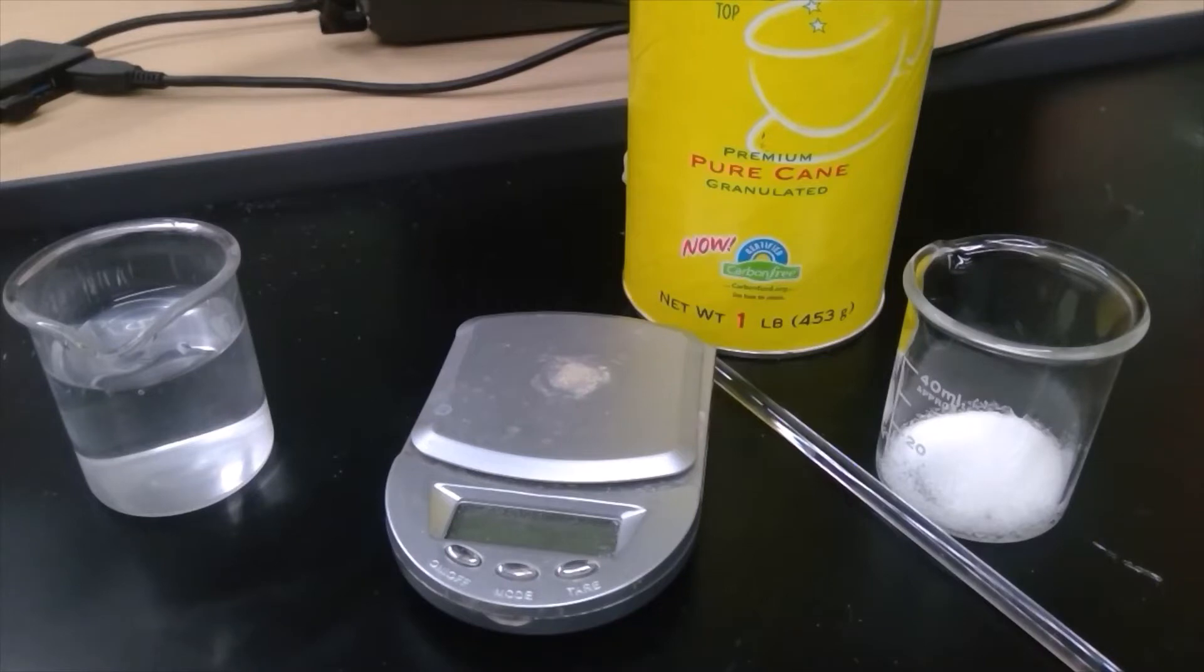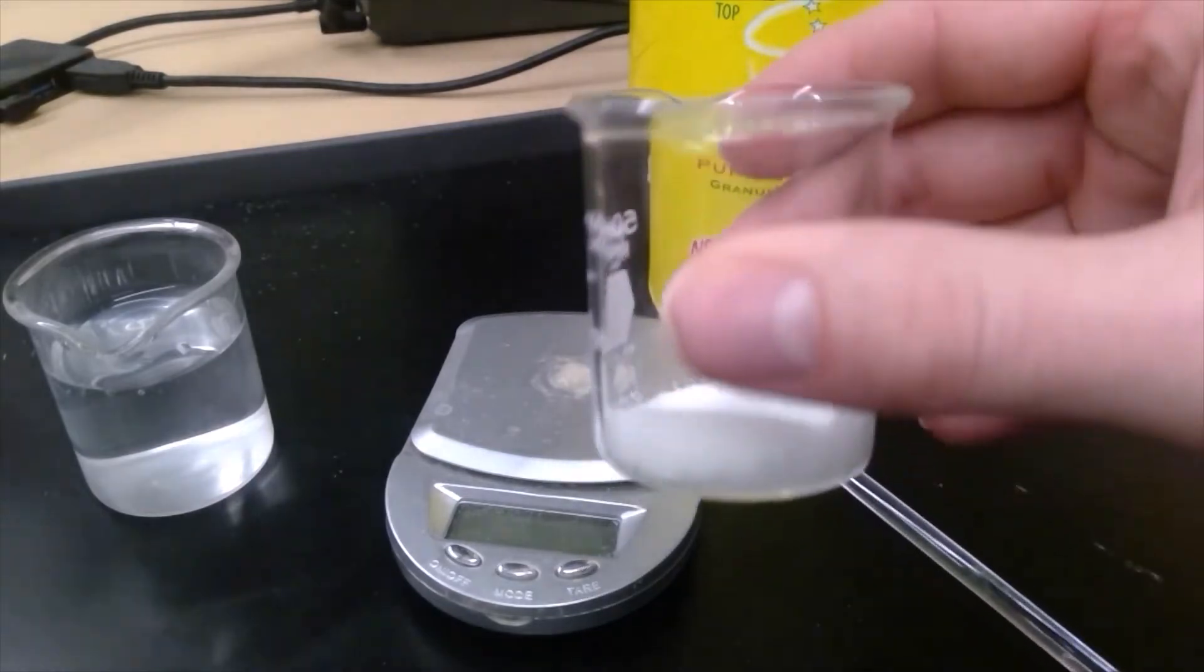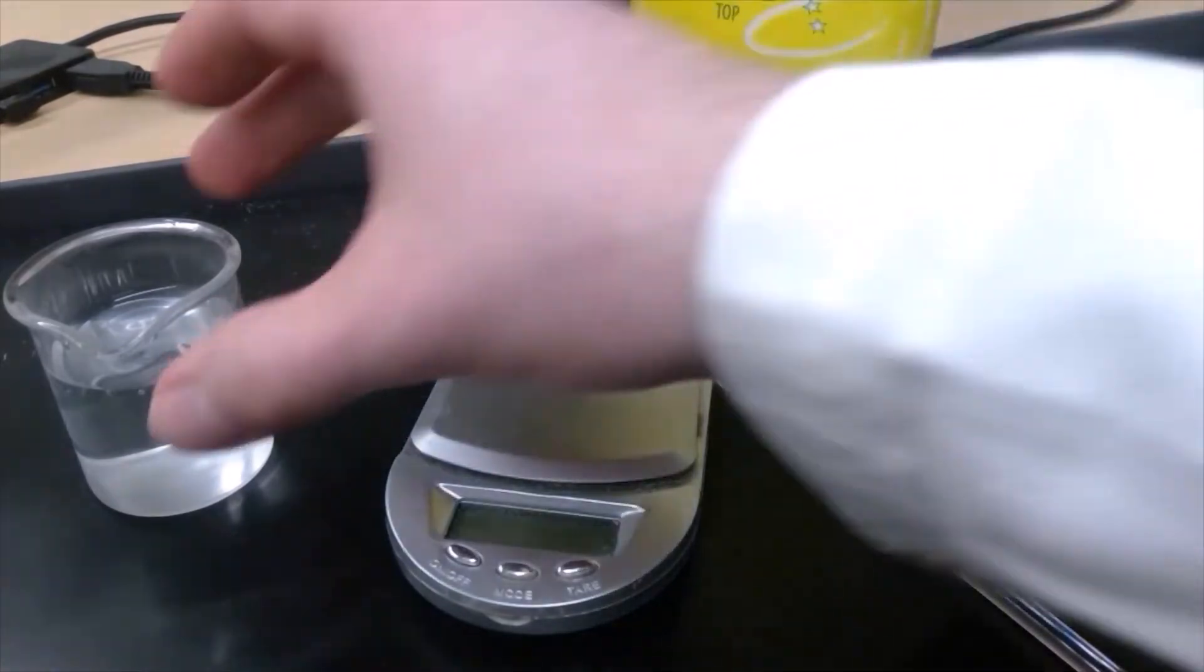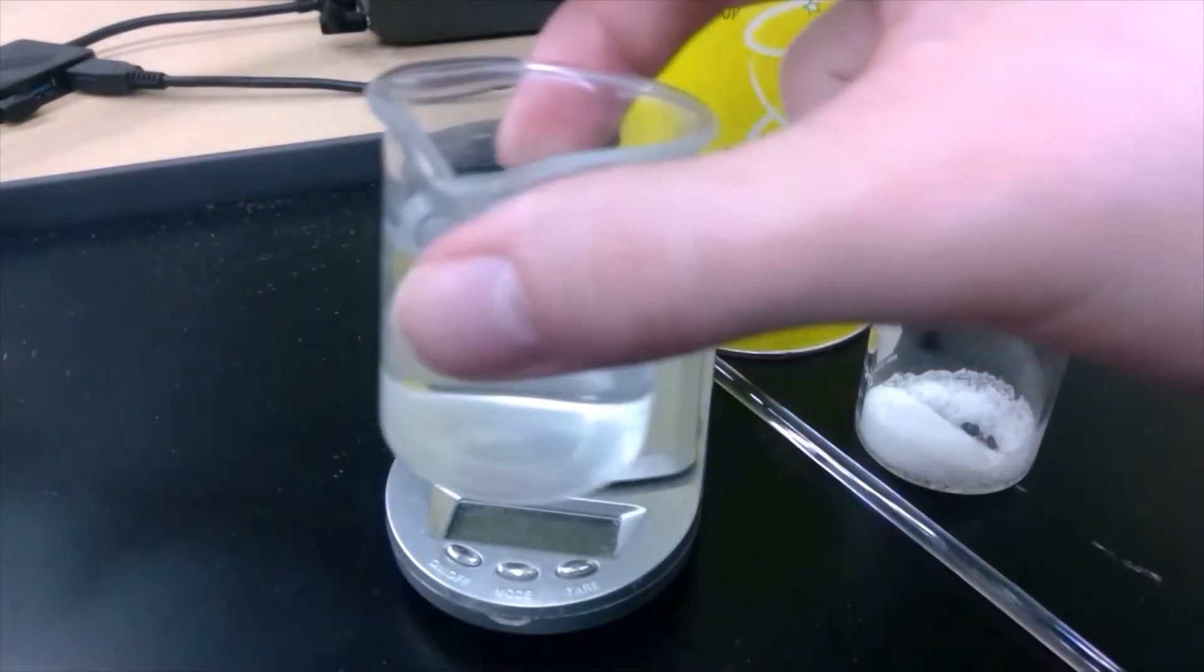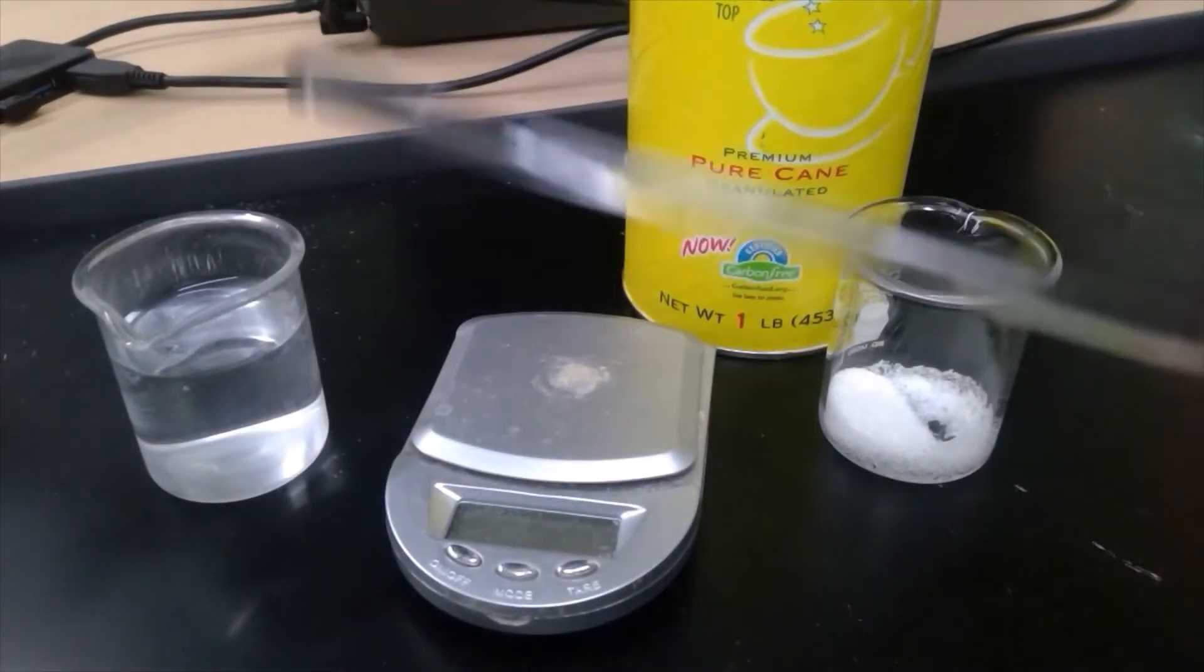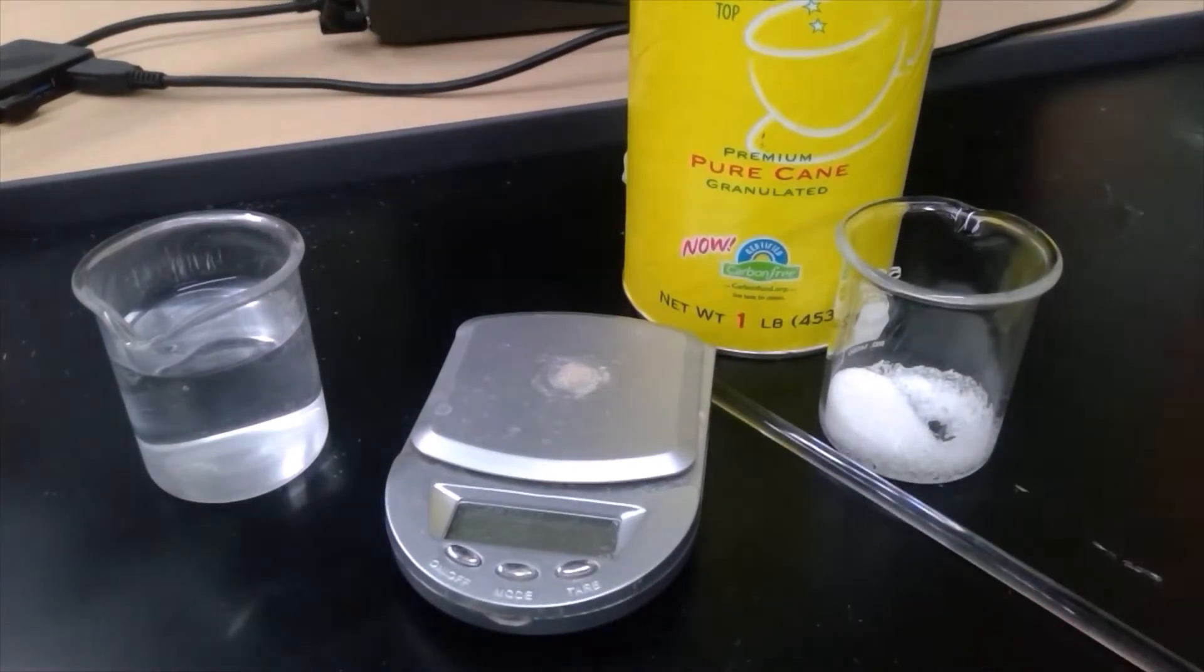Measurement number four: mixing sugar and water. I have a beaker of sugar. Make any observations about the sugar. A beaker of water. What observations can you make about the water? And a glass stirring rod, which I'll use to mix them together. Let's get the mass before.